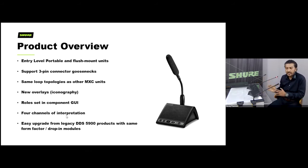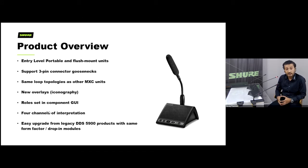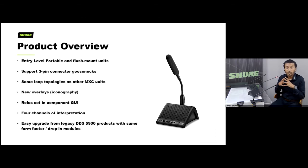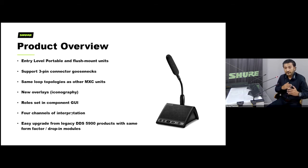The new overlays can have roles set up in the GUI. Another key improvement is the addition of two extra interpretation channels: the DDS 5900 supported two channels of interpretation, while the MXC605 supports up to four channels. The upgrade from legacy DDS 5900 to MXC605 is also easy — older 5900 units can be upgraded with newer firmware and become part of the same chain as the new units, subject to certain conditions.